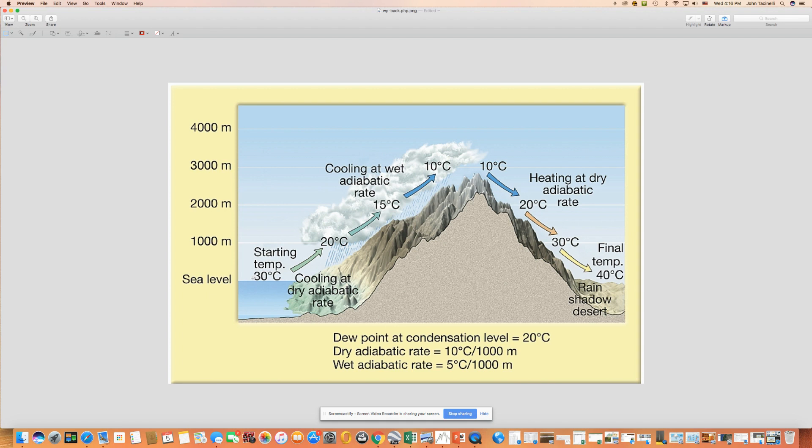Then it's going to be moving along here at the surface, but it's going to encounter this big bump—the mountain range. As it's forced to rise up over the mountain range, it's going to cool first at the dry adiabatic rate of 10 degrees Celsius per 1,000 meters. That's one degree for every 100 meters. So if it goes up 100 meters, it cools off one degree; 200 meters, two degrees; 300 meters, three degrees.